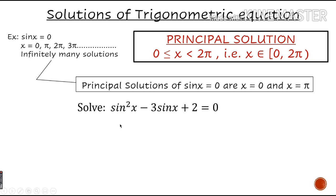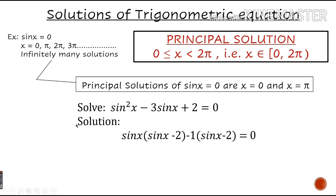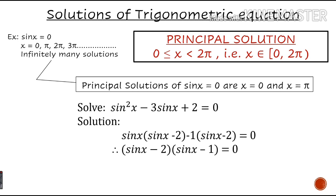Next example: let's solve sin squared x minus 3 sin x plus 2 equal to 0. We can factorize this as (sin x minus 2)(sin x minus 1) equals 0, so we get sin x equal to 2 or sin x equal to 1. When sin x equals 1, we know that sin of pi by 2 is 1, so x equals pi by 2. The principal solution for this equation is x equal to pi by 2. What about sin x equal to 2?